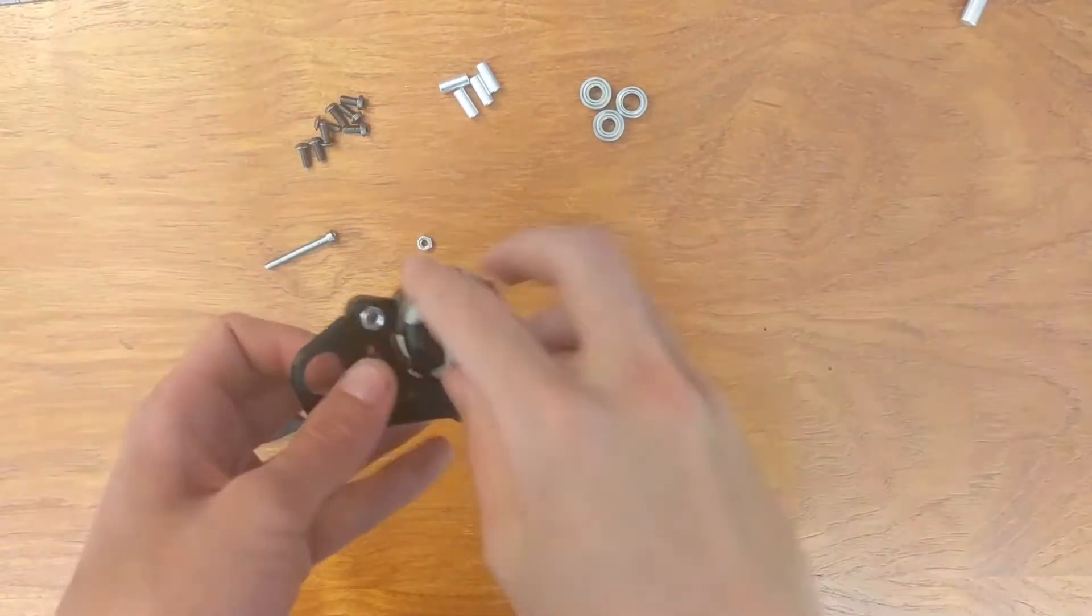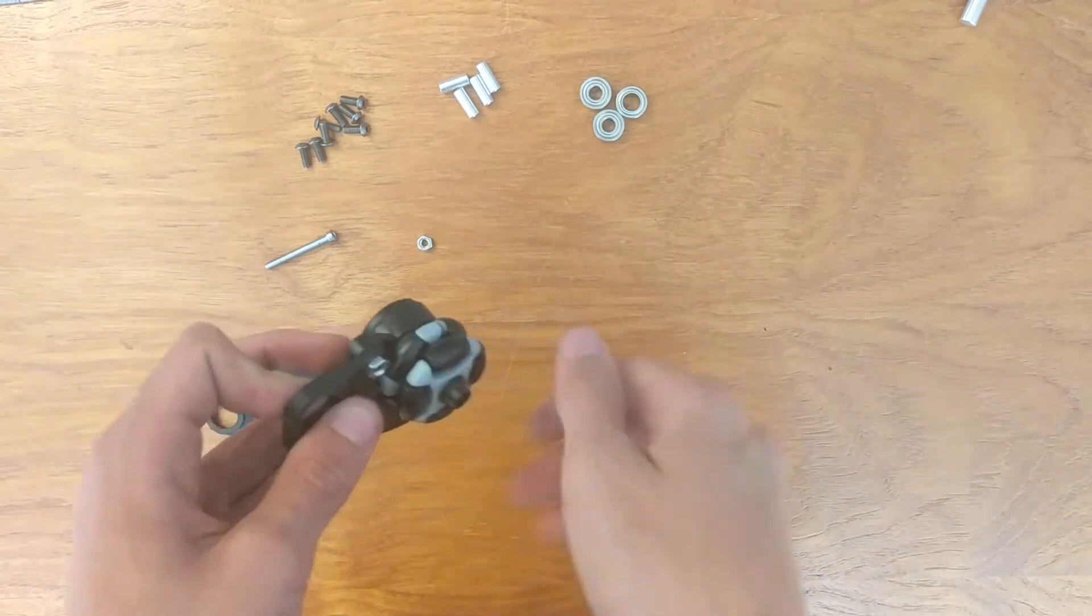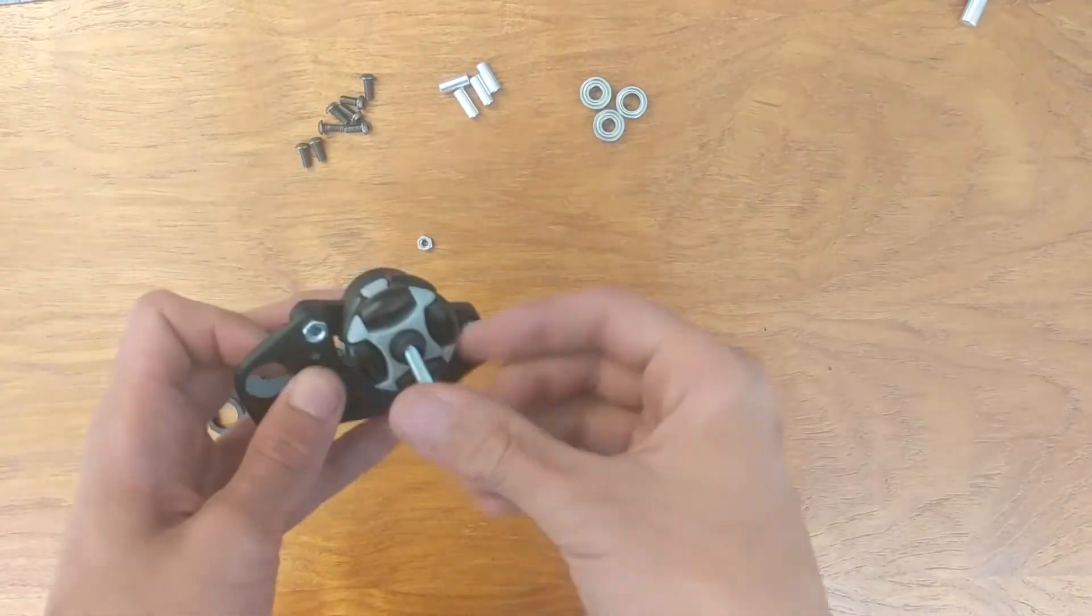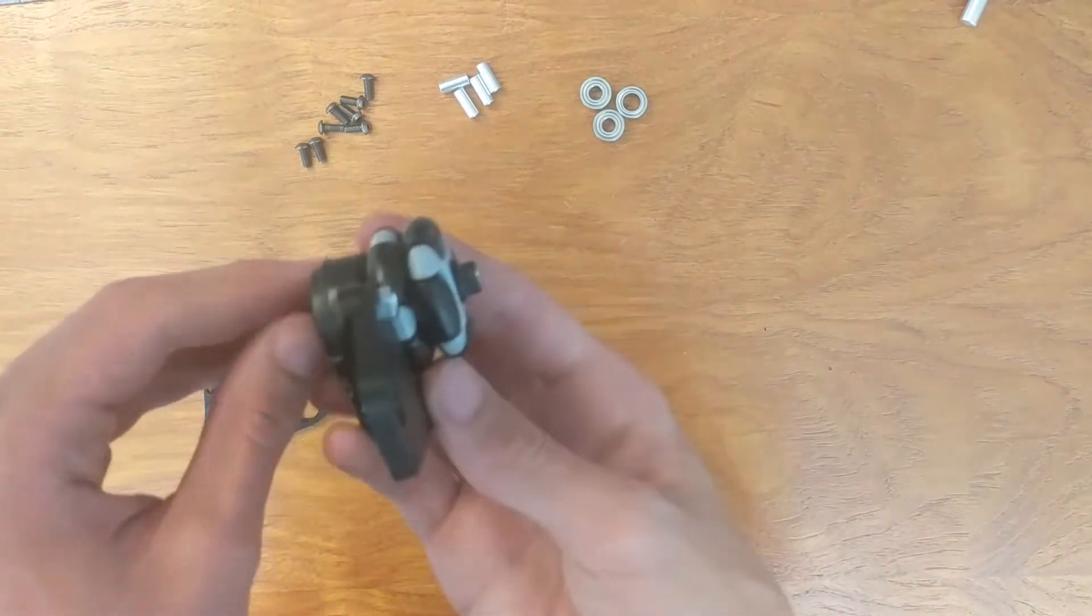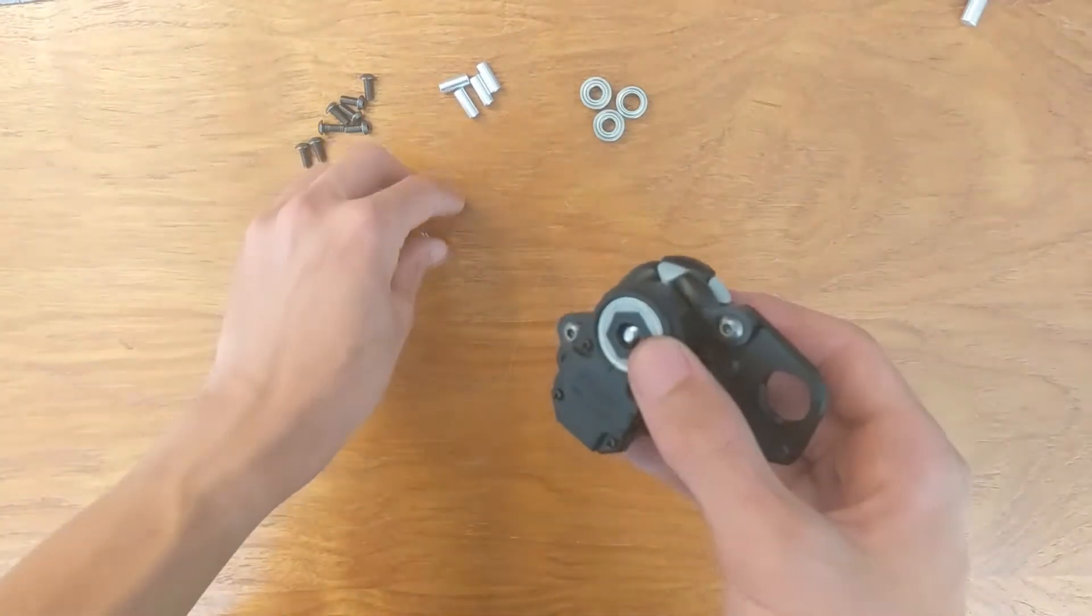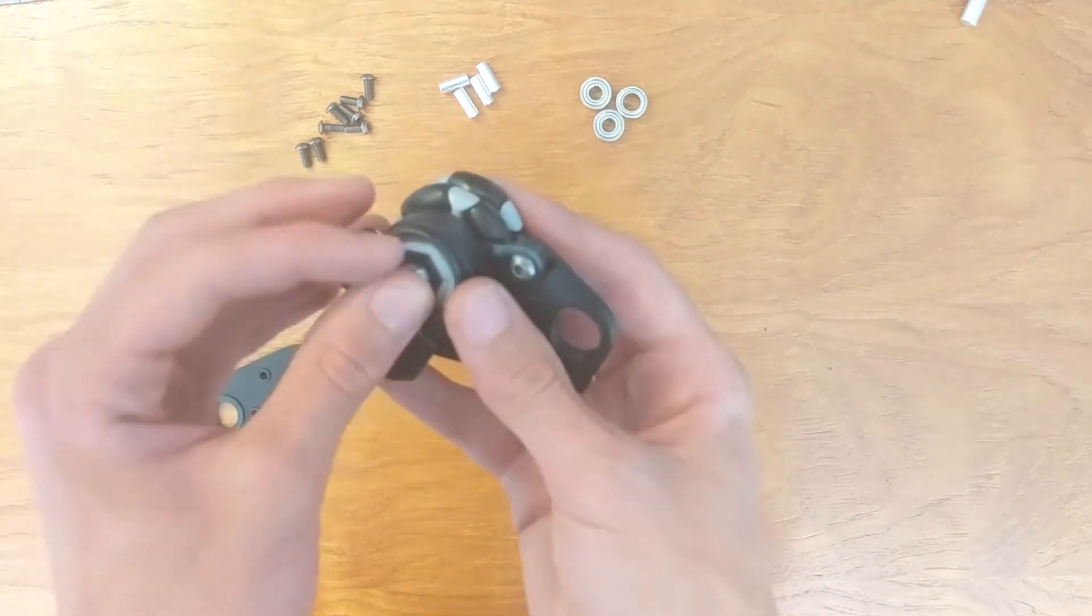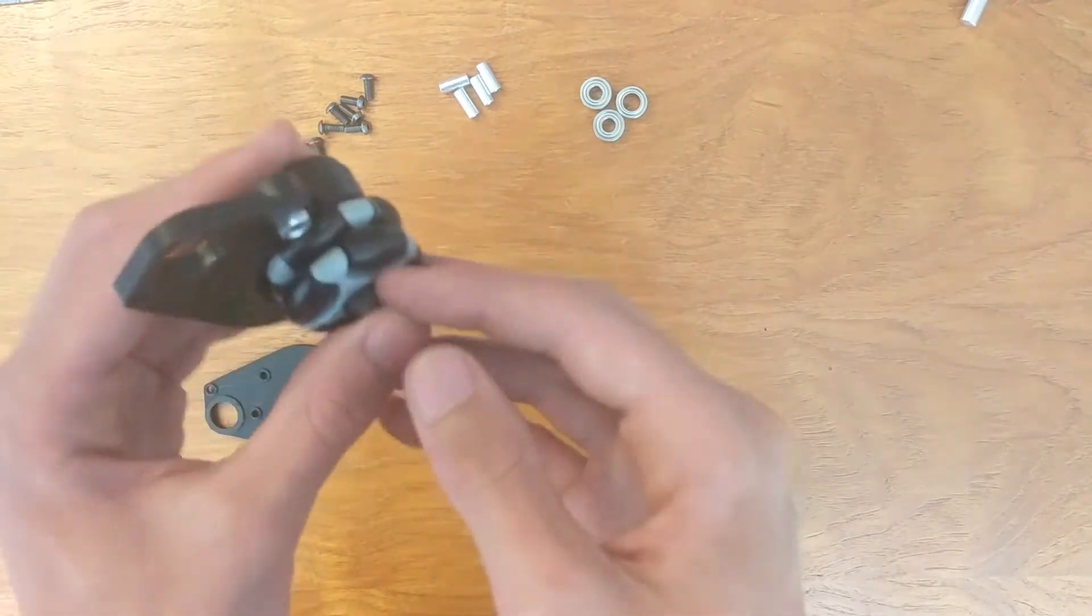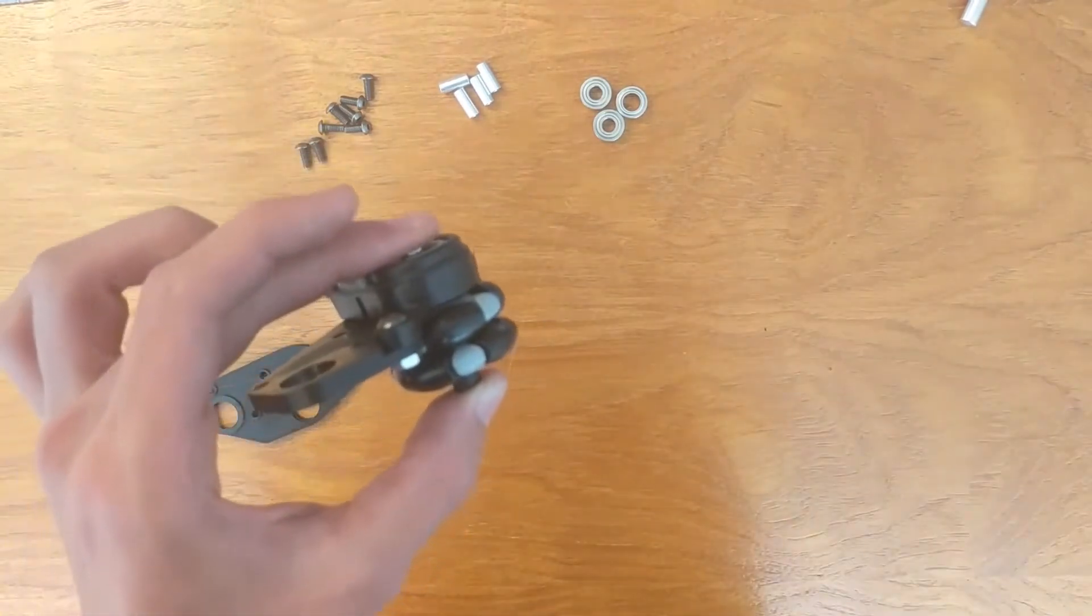The last step for finishing the axle is going to be to take the screw, feed it through this end—it should fit within the profile of the insert—and then take the nut, which should fit into the back side of the other insert, and screw it together so that your axle is nice and solid.